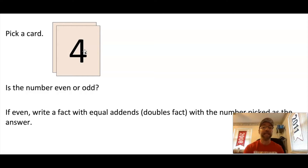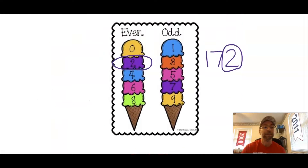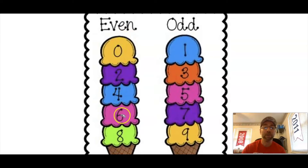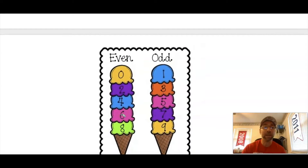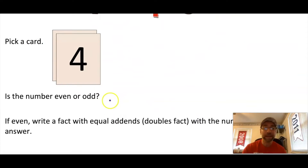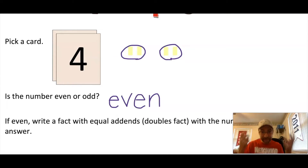If you remember our little saying — 0, 2, 4, 6, 8, who do we appreciate? — you'll be able to tell whether the number is even or odd. When we looked at our ice cream chart, we saw that even numbers end in 0, 2, 4, 6, or 8. So the number 4 fits in the even column. On our whiteboard, write 'even.' I can also use dots to check: 1, 2, 3, 4 — I made pairs! Even numbers always come in pairs, with a dance partner, never one left alone.